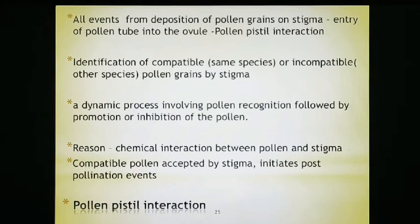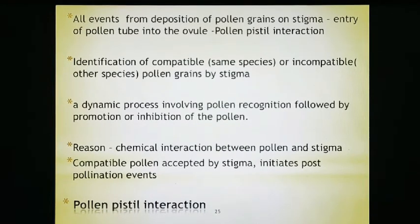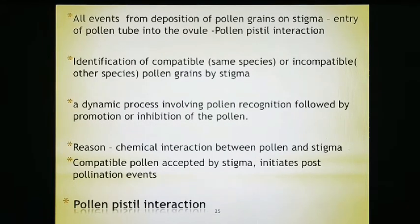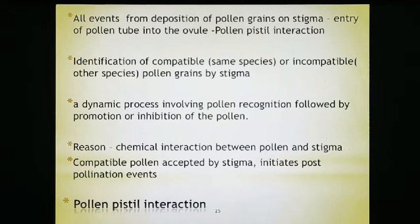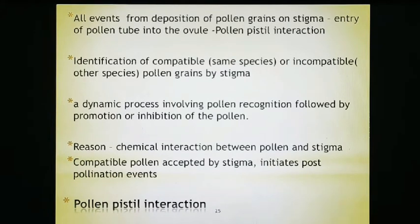Pollination is a condition where pollen grains and pollen tubes will form all within the same species. Generally, what happens is that when pollen grain of the same species lands on the stigma, pollen tube germination occurs. All events from the deposition of pollen grains on the stigma to the entry of the pollen tube into the ovule constitute pollen-pistil interaction. The first point is the identification of compatible and incompatible pollen grains by the stigma — compatible means same species, then it will fuse.